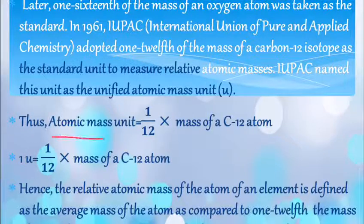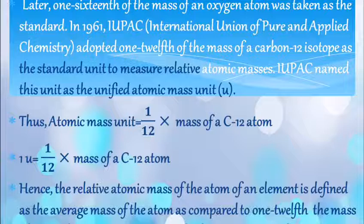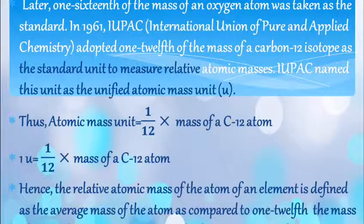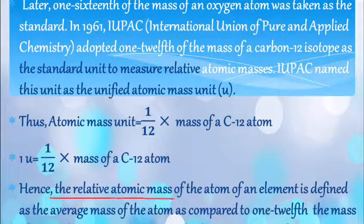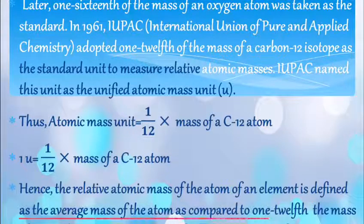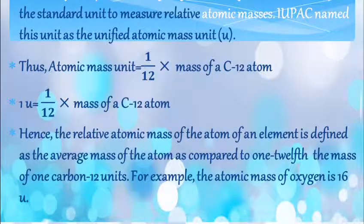Thus, atomic mass unit is one-twelfth mass of the carbon-12 atom, or 1 u equals one-twelfth mass of C-12 atom. Hence, the relative atomic mass of an atom is defined as average mass of the atom as compared to one-twelfth the mass of one carbon-12 unit.